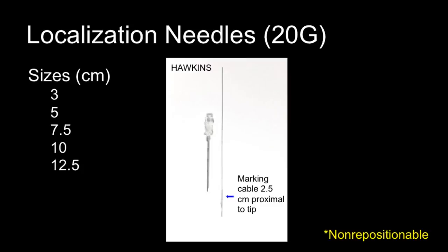The Hagen's needle wire is another non-repositionable wire, coming in lengths from 3 to 12.5 centimeters. It is similar to the Copen's regarding needle placement and needle wire exchange. The difference is a radiopaque marker located 2.5 centimeters from the proximal tip, which guides the surgeon to the area of interest.